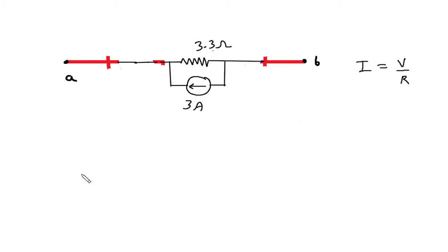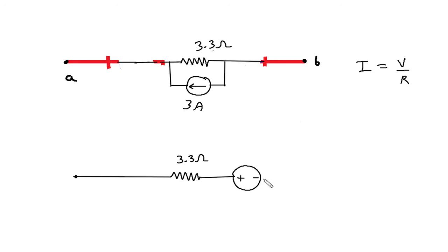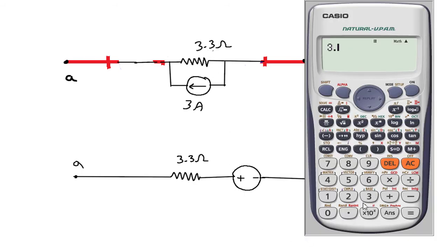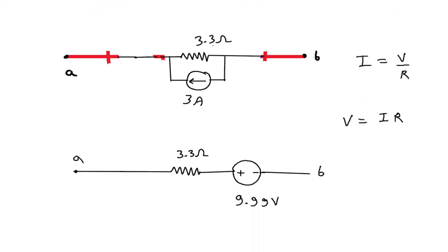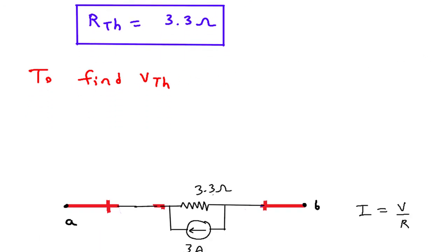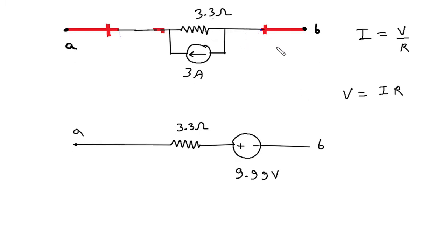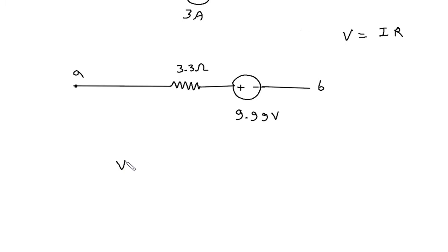Now we can convert this current source into its equivalent voltage source. This gives 3.3 Ohm in series with a voltage source; the polarity is positive at top and negative at bottom. Terminal B is here and terminal A is here. V equals I times R, where I is 3 Ampere and R is 3.33 Ohm, so this will be 3.33 times 3, which equals 9.99 Volt. So VTH equals 9.99 Volt.